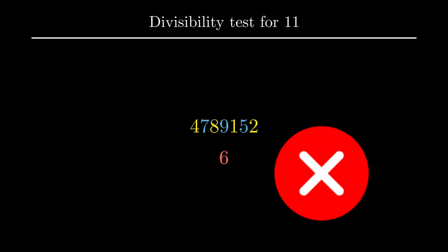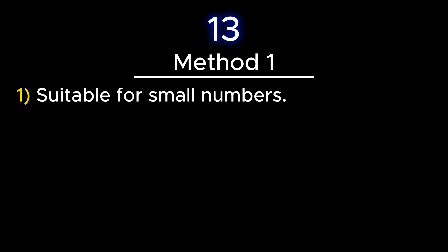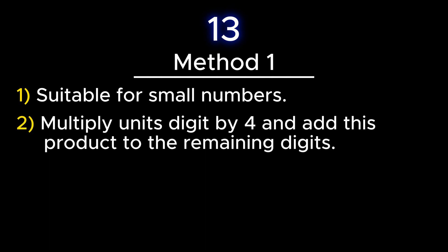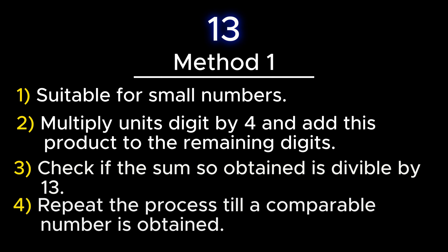Moving on to the next prime number, that is number 13. Again there are two ways to test whether a number is divisible by 13. The first test is suitable for small numbers, that is 3-digit or 4-digit numbers. To check divisibility by 13, multiply the units digit by 4 and add the product to the remaining digits. If the sum is divisible by 13, then the given number is also divisible by 13. This process is repeated till a comparable number is obtained.